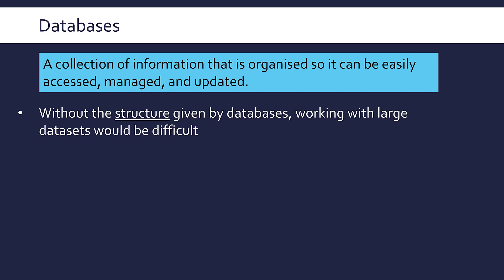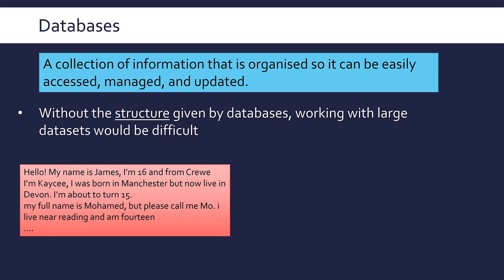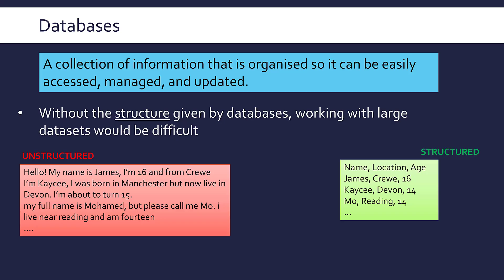If you've got a thousand, a million, a billion items, without some structure, how on earth would you be able to use it? Here is some text collecting information about people — their name, where they live, and their age. For example: 'My name is James, I'm 16, I'm from Crewe. I'm Casey, born in Manchester, but now I live in Devon.' As a human you can read and interpret that, but for a computer, writing code to extract names, ages, and locations would be very tricky because it's unstructured data with no consistency, making it very difficult to interpret.